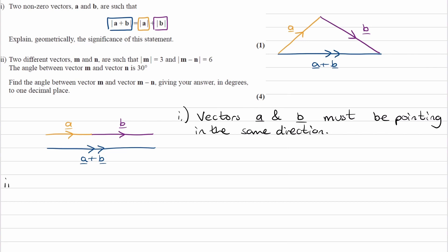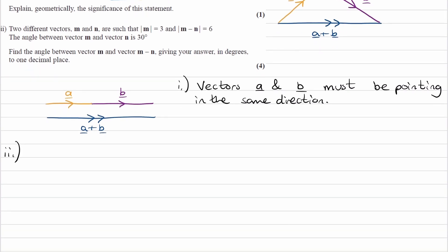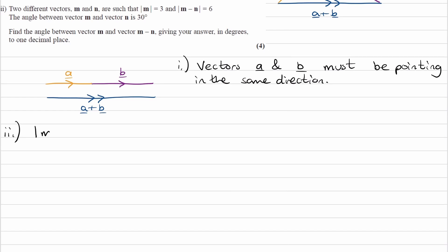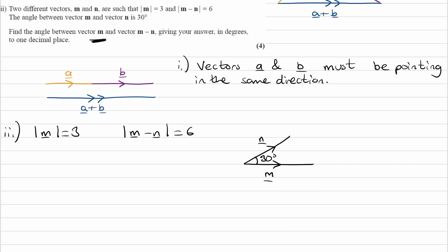For part two, we're given two different vectors m and n. We're told the magnitude of m is equal to 3, the magnitude of m minus n is equal to 6, and the angle between m and n is 30 degrees. We're not given much information about which direction these vectors point, so I'll assign random directions. We're trying to work out the angle between m and m minus n, so let's draw m minus n to figure out this angle.